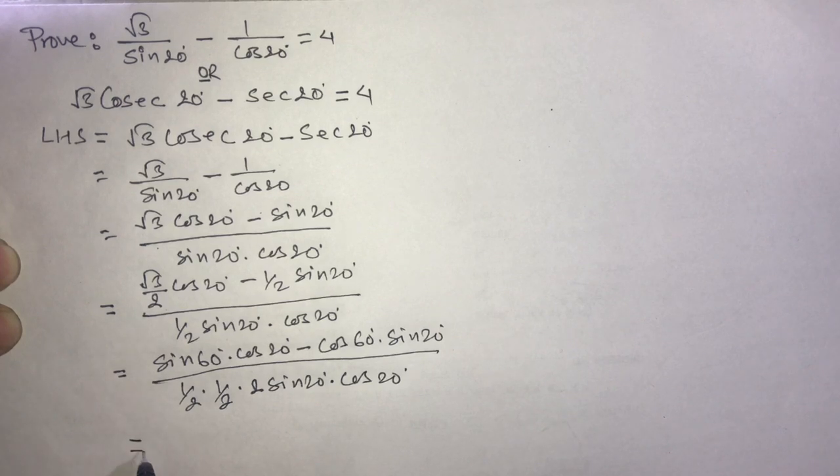The numerator is sin A cos B minus cos A sin B, which is the formula of sine A minus B. This is sine 60 degree minus 20 degree.